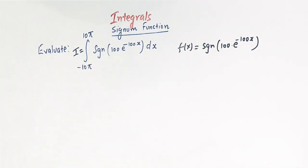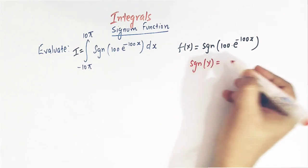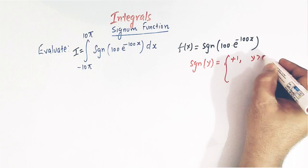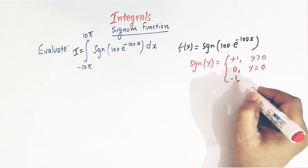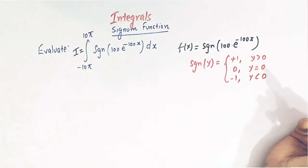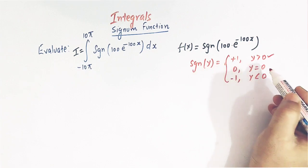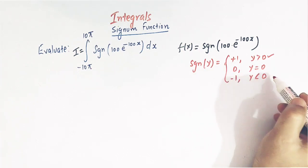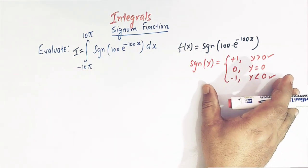Let us first revisit the definition of the signum function. The signum of y is defined as follows: signum of y takes the value plus 1 whenever y is greater than 0, signum of y is 0 whenever y is equal to 0, and signum of y is minus 1 whenever y is less than 0. So for all positive y, signum of y is plus 1; for y equal to 0, it is 0; and for negative y, signum of y is minus 1. We will solve this integral using this definition.